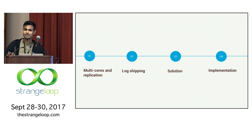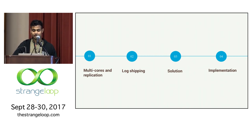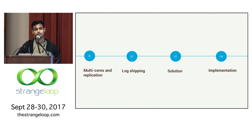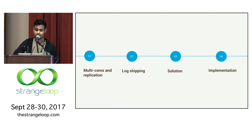This talk is divided into four parts. In the first part, I'll go into some background on multicores and replication. In the second part, I'll describe log shipping-based replication. I'll then talk about a solution to the parallelism gap mentioned in the title. And finally, I'll give some detail on the implementation challenges in implementing this solution.